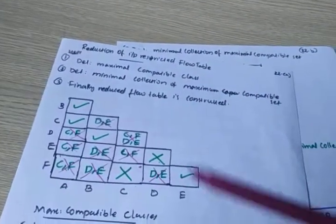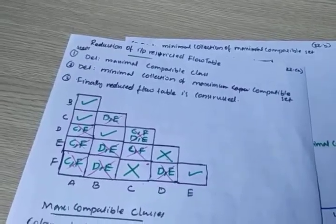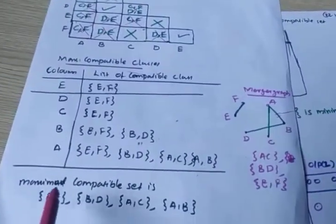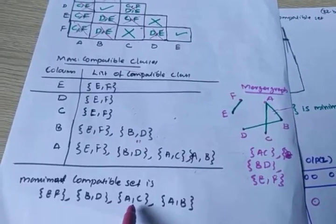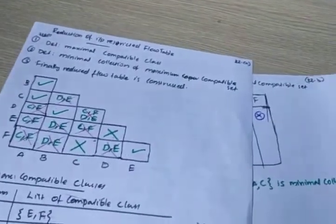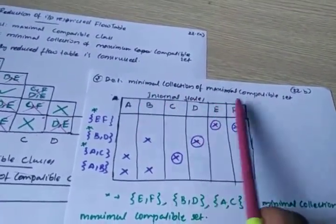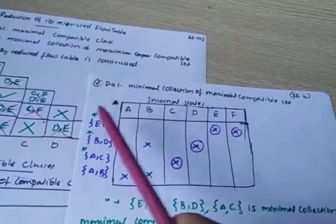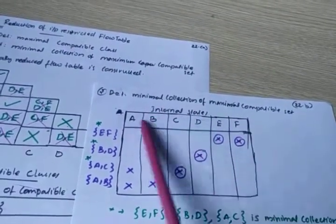The next step is to find out the minimal collection of maximal compatible sets. We already found out the maximal compatible sets, and from these we need to find the minimum selection — the minimum collection of maximal compatible sets. For that, you have to draw a table like this. Internal states are represented in the rows.